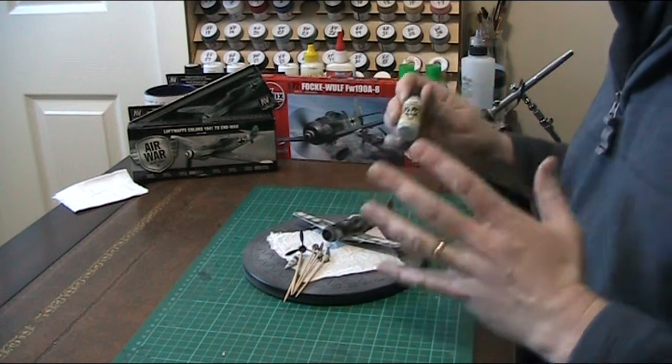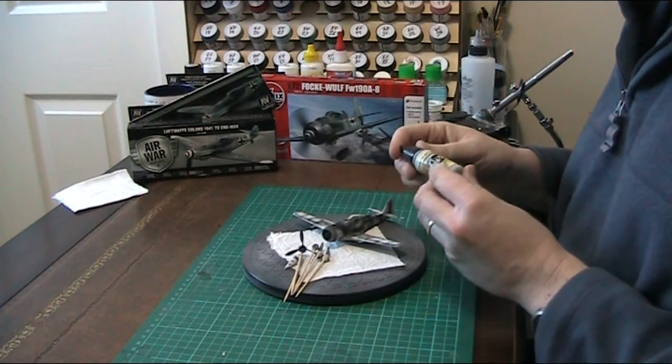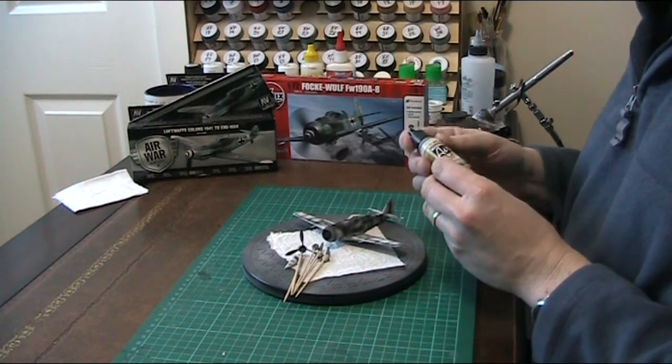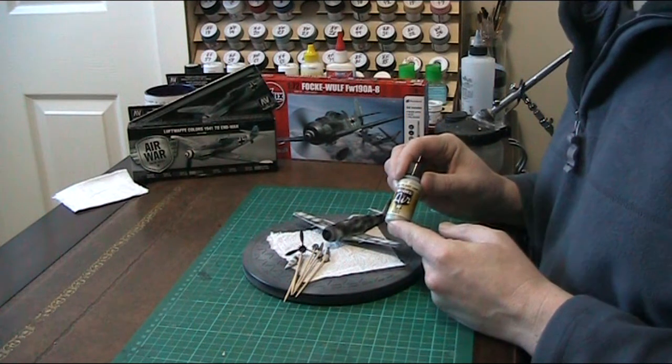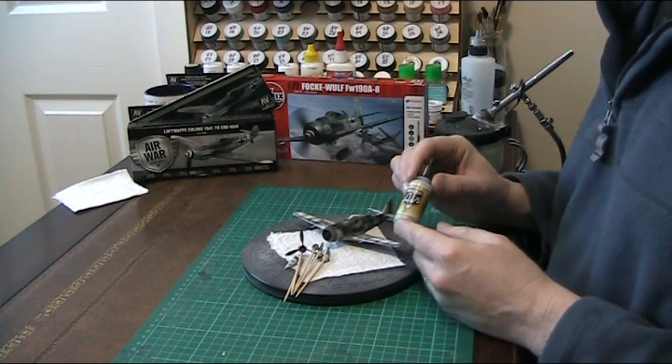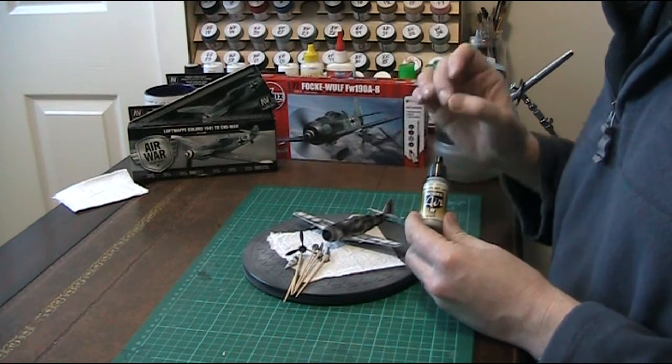This can go on and then give that 24 hours to really harden and go off. As I've said before, the Vallejo Model Air can be quite delicate, so sometimes it needs that extra little bit of time just to really make sure it goes on before you mask it off.